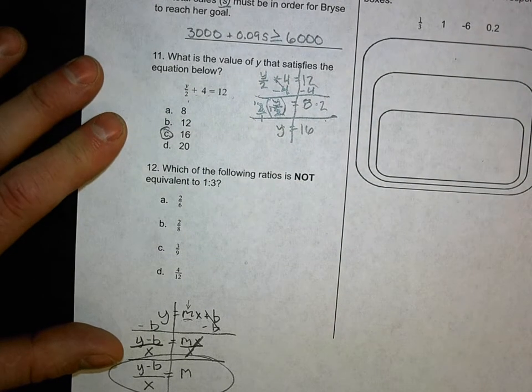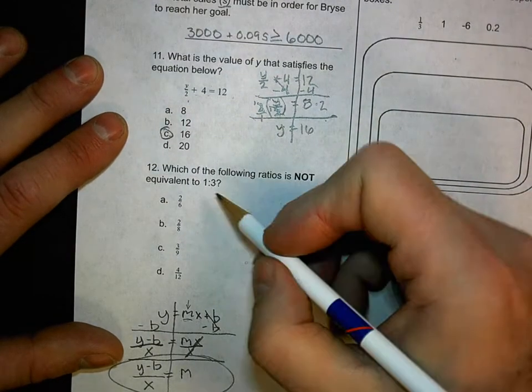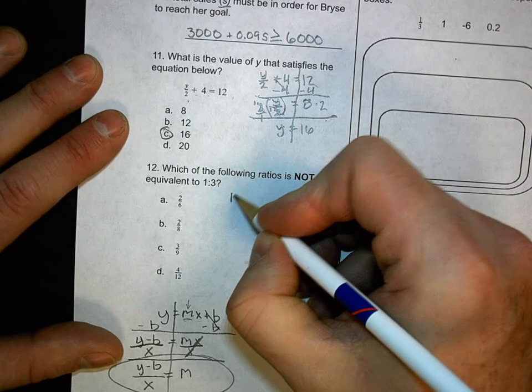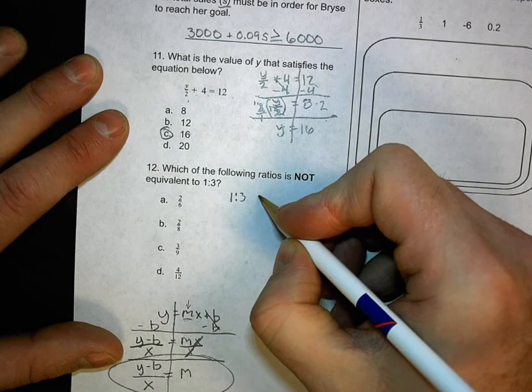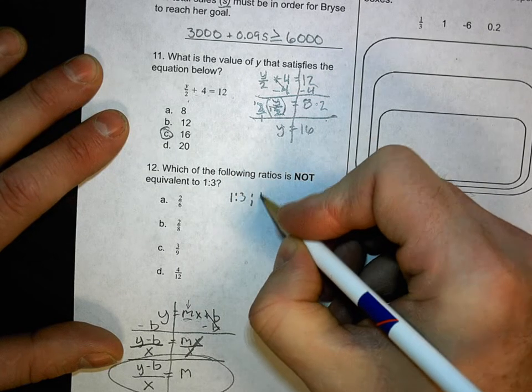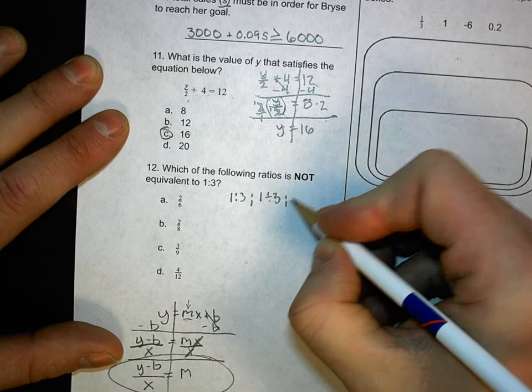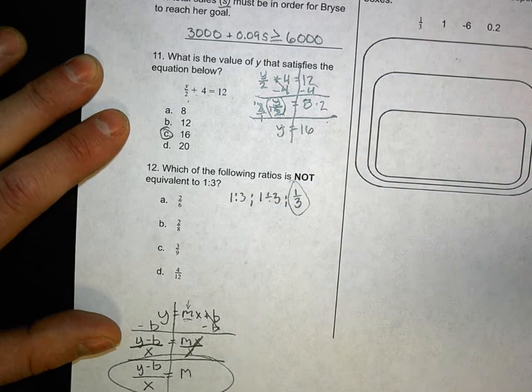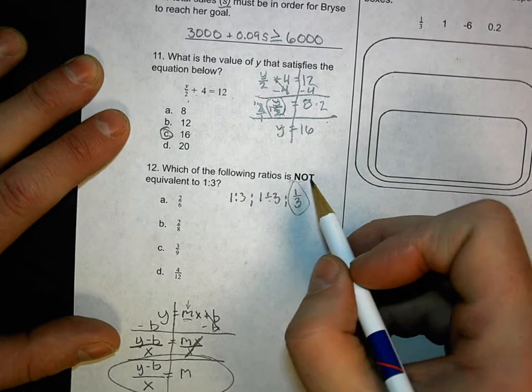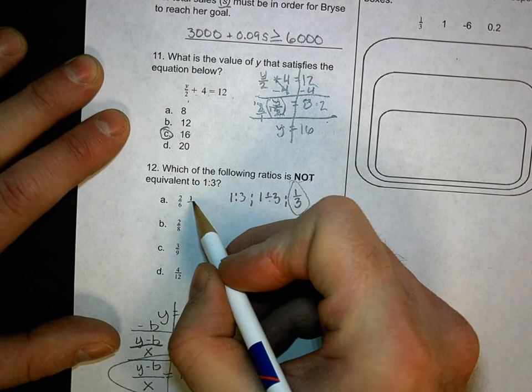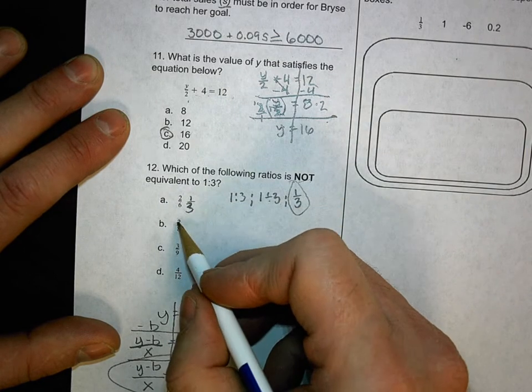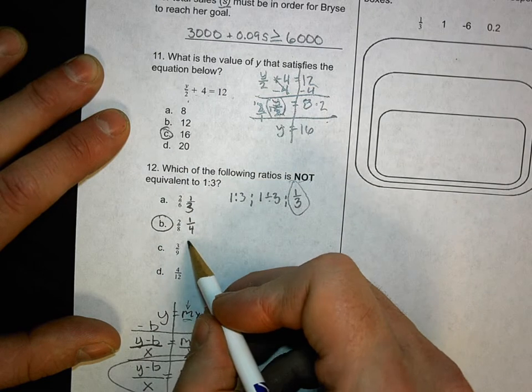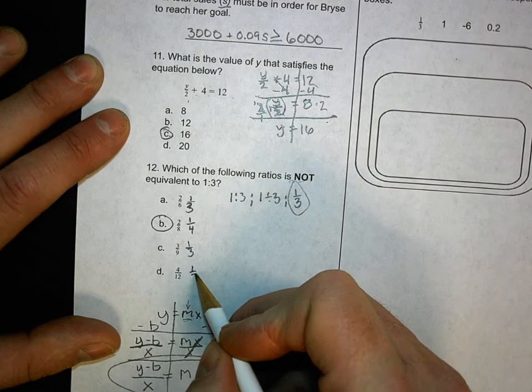So which of the following ratios is not equivalent to 1 over 3? Now, 1 to 3 ratio, it's written like that. Remember, a ratio can be written like that. It can be written as, or it can be written as 1 divided by 3. Or it can be written as 1 third. And that's really what we're looking for is this ratio. So which one of these, basically, which one simplifies to 1 does not? We're looking for not. 2 over 6, if I simplify it, it becomes 1 third. 2 over 8, if I simplify it, it becomes 1 fourth. That's clearly not the one. 3 over 9, again, 1 third. 4 over 12, 1 third. So it was definitely B.